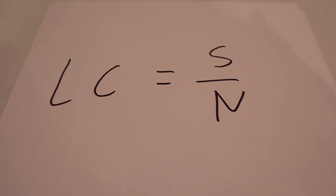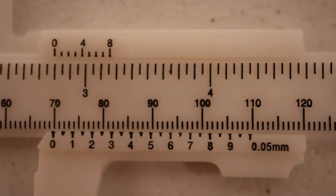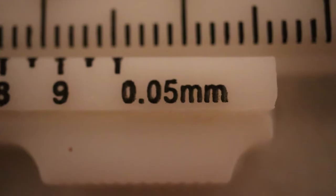For this caliper, every delineation on the main scale represents 1 mm, and there are 20 divisions on the vernier scale, making the least count 0.05 mm, as predicted.